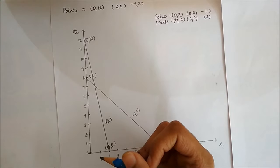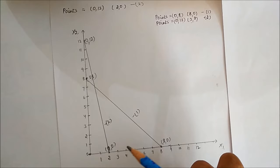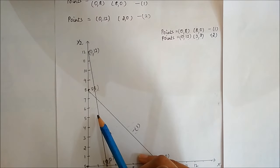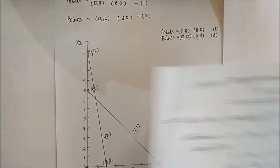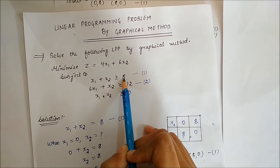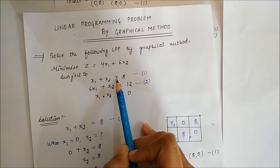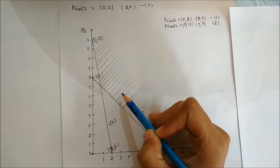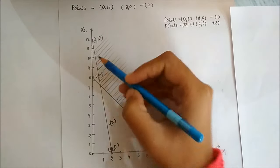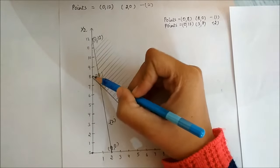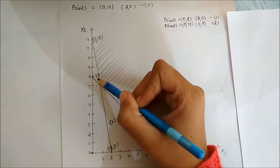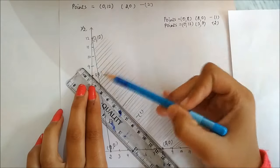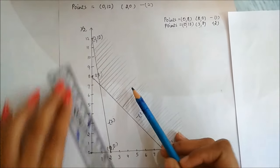Now we will find out the feasible region. The feasible region is the region which fulfills both constraint conditions. Since our constraints are greater than or equal to, the feasible region is above both lines. The region above the first equation and above the second equation — this common region is the feasible region.